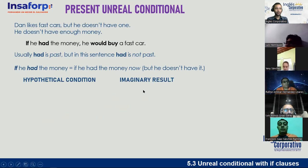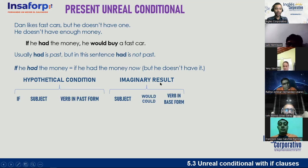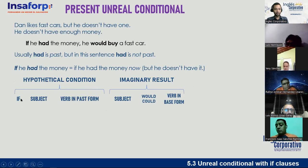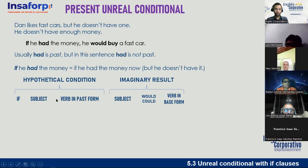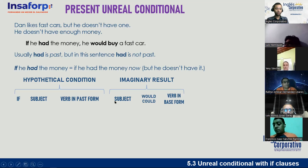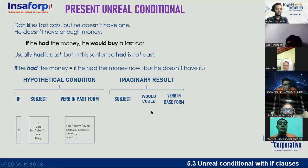Conditionals basically have two sections: there is a hypothetical condition and there is an imaginary result. Each section has very specific forms. The hypothetical condition uses the structure: 'if' + subject + verb in past form. Be very careful — the verb may appear in past form in these sentences, but structurally it only represents the structure; in meaning, we are not talking about the past.